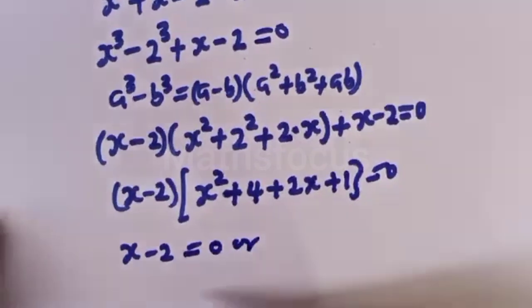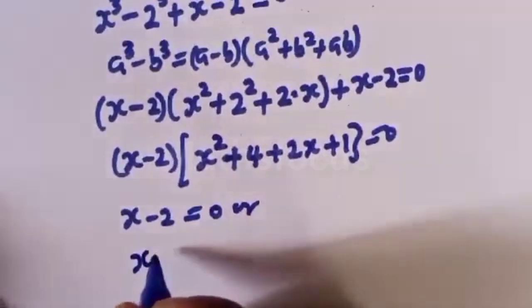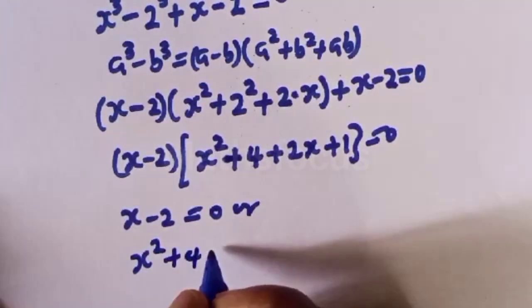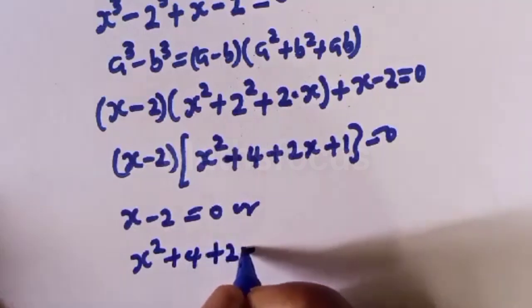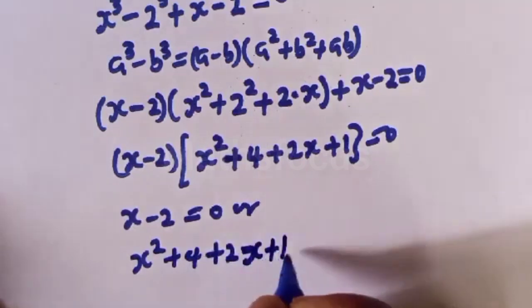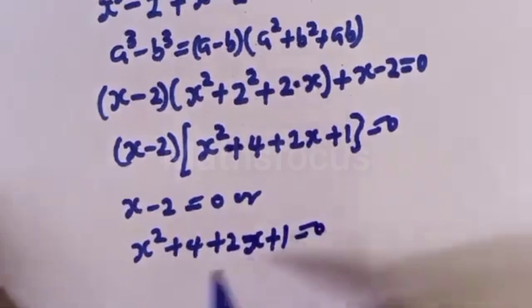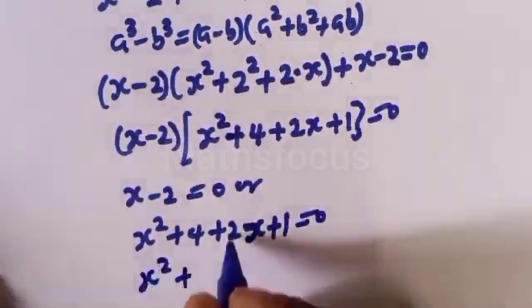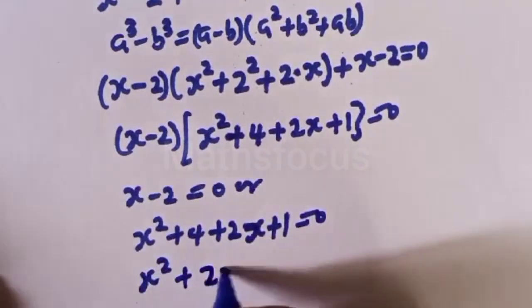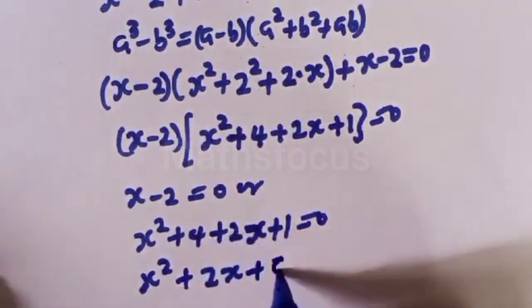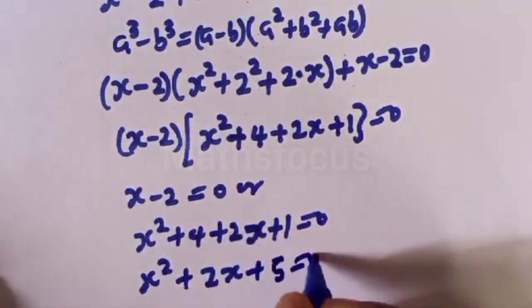Now this gives us s minus 2 equal to zero, or s squared plus 2s plus 5 equal to zero. This is a quadratic equation.